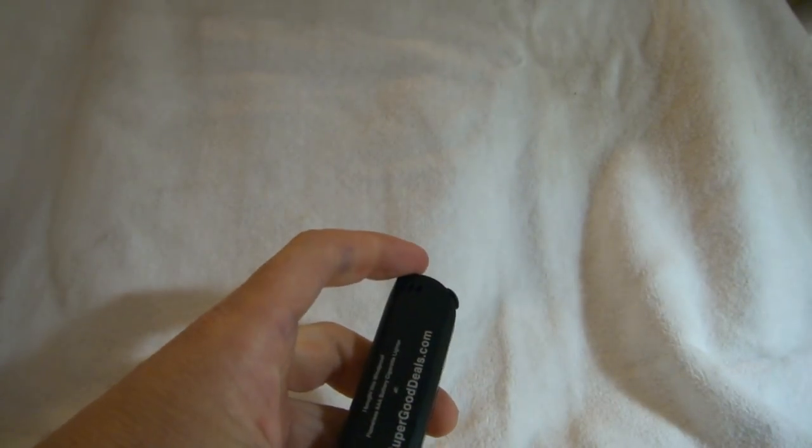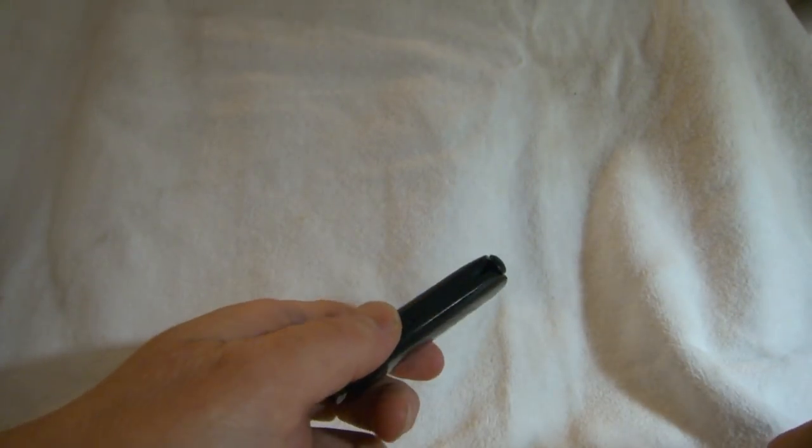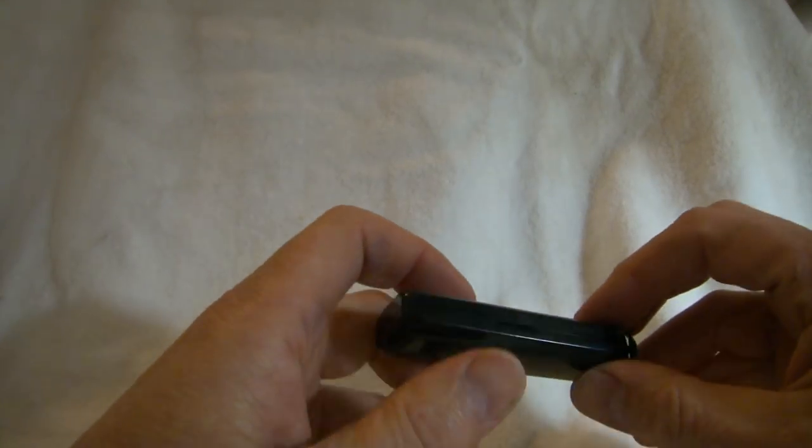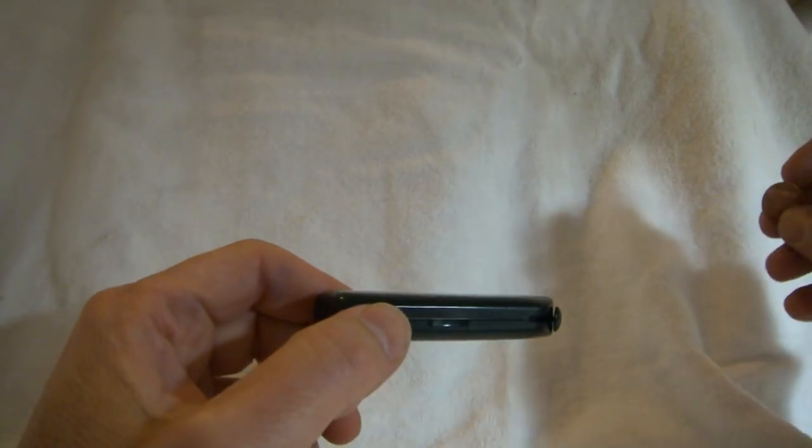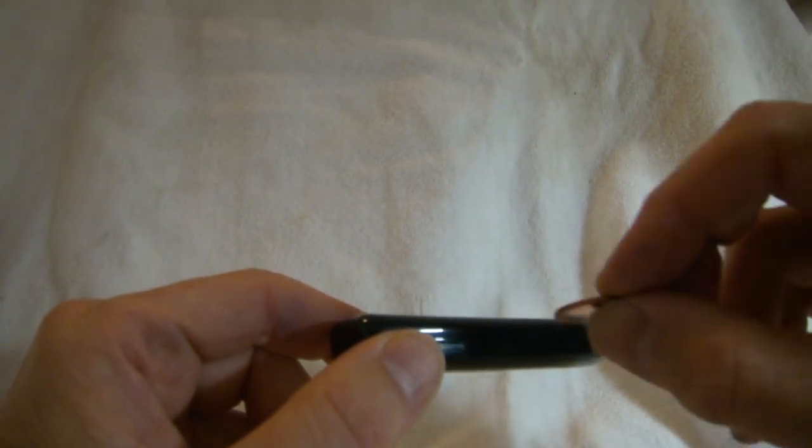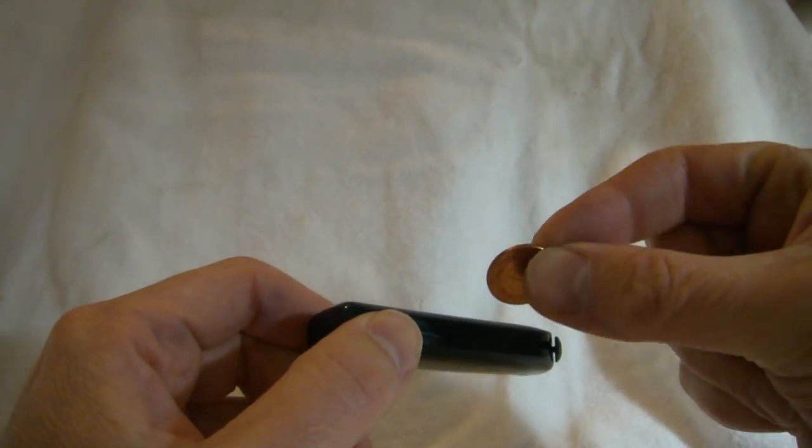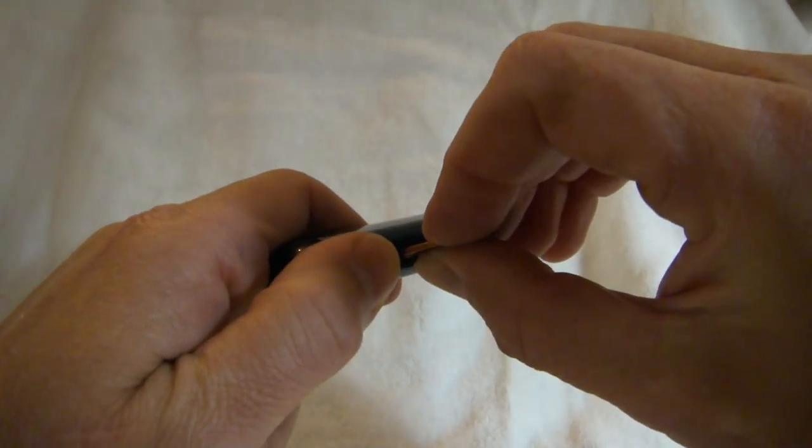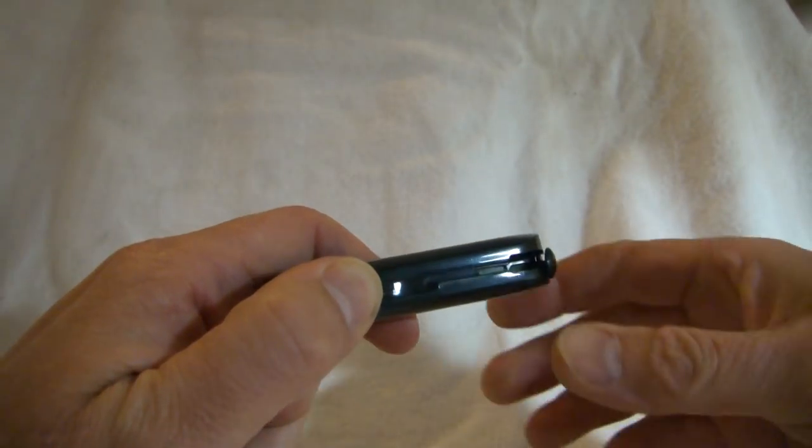To open the battery lighter and replace the batteries, and by the way, the batteries last for about 75 to 80 lights, this little slot here, just take a little coin, any coin, I'm using a penny here, and gently put it in the slot and then twist to pop it open.